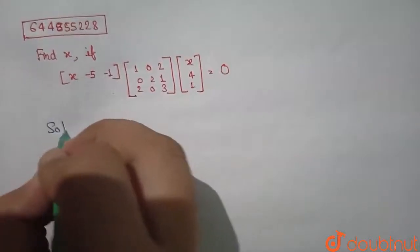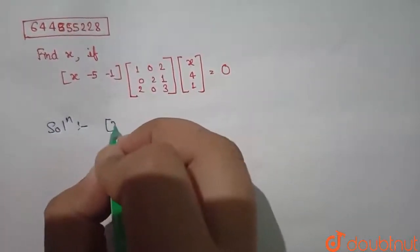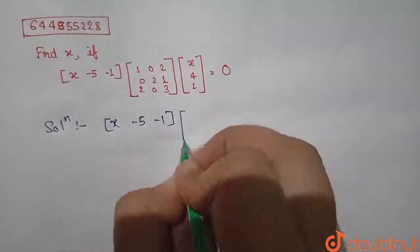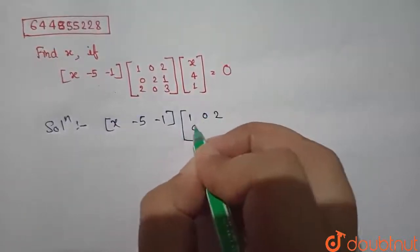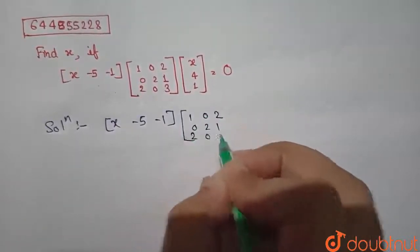So consider first two matrices as [x -5 -1] into [[1, 0, 2], [0, 2, 1], [2, 0, 3]].